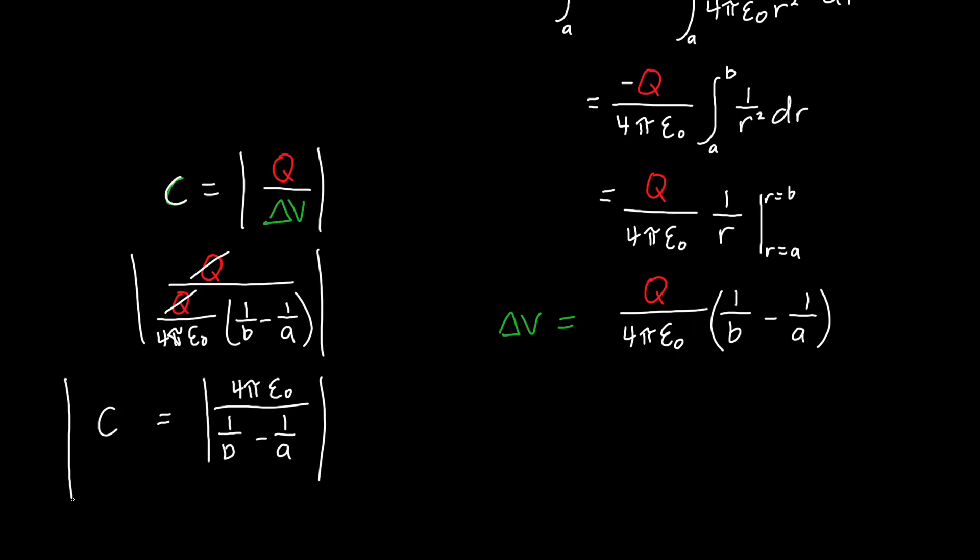This is the capacitance of a spherical capacitor with an inner radius of A and an outer radius of B. If you wanted to get rid of these absolute value signs, because A is always going to be smaller than B, the bottom is going to be negative. So if we just flip the order, 1 over A minus 1 over B, this is always going to be positive. This is the formula you'll usually see for the capacitance of a spherical capacitor.